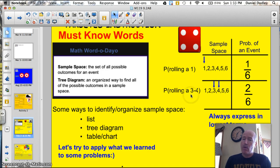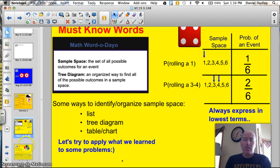What's the probability of rolling a three or four? And what is the sample space? Well, again, here are all the possible combinations. And, of course, there's two possible outcomes that are favorable. So, that's two and six. That's the probability. Of course, expressing that in lowest terms, that would be one-third. So, there are some different ways to organize sample space. A list is one way of doing it. A tree diagram is a great way, and so is a table and a chart. Let's try and see if we can apply what we've learned to some different problems.